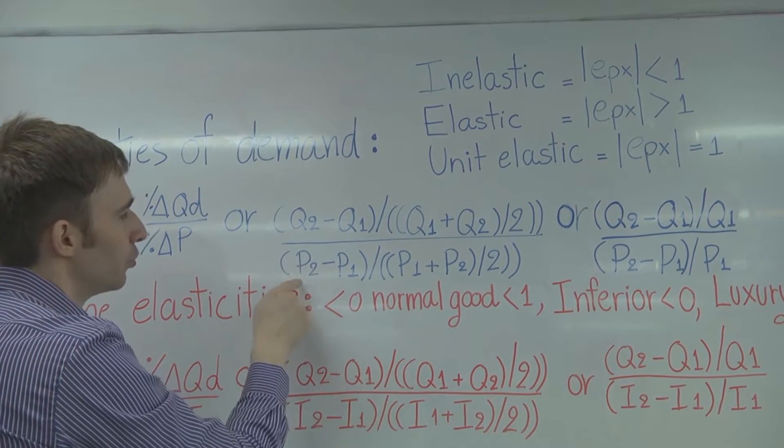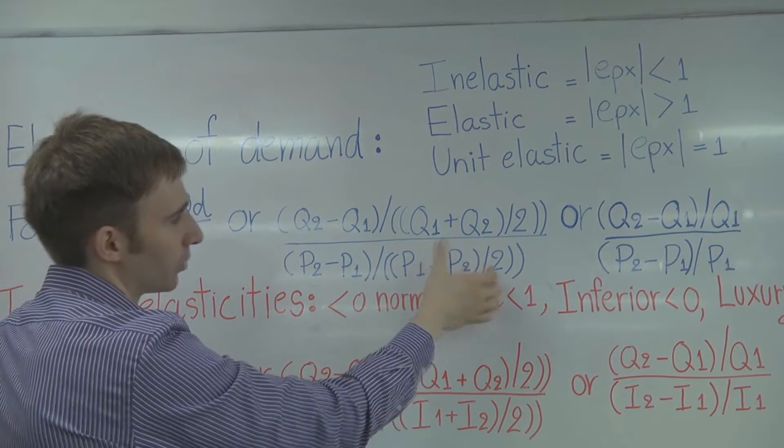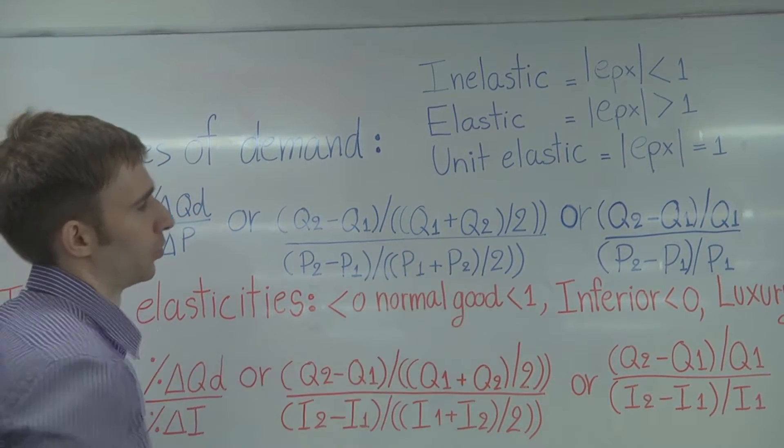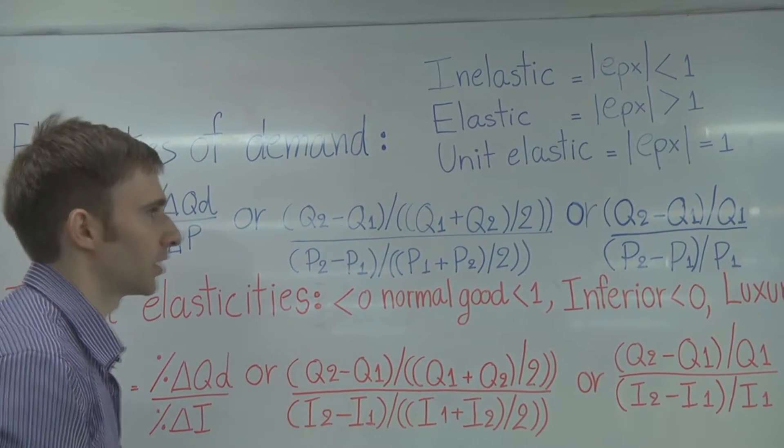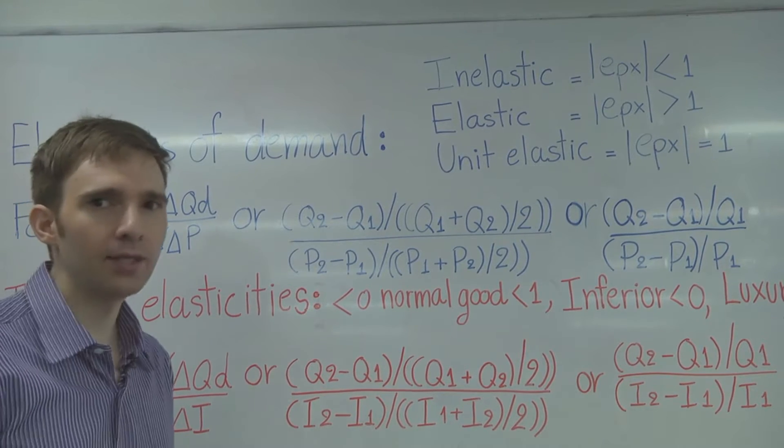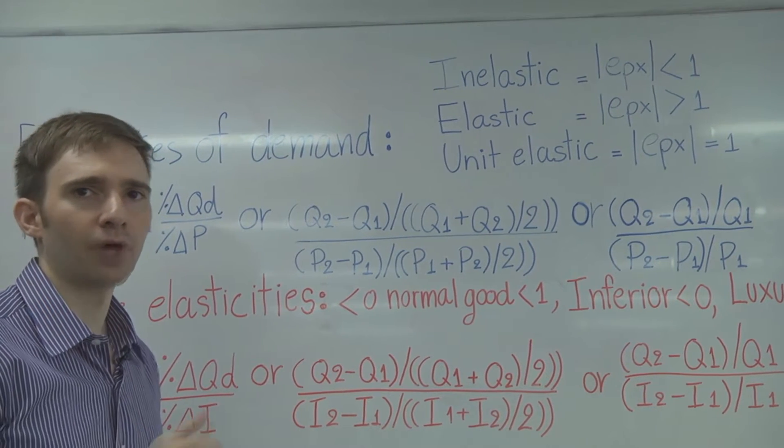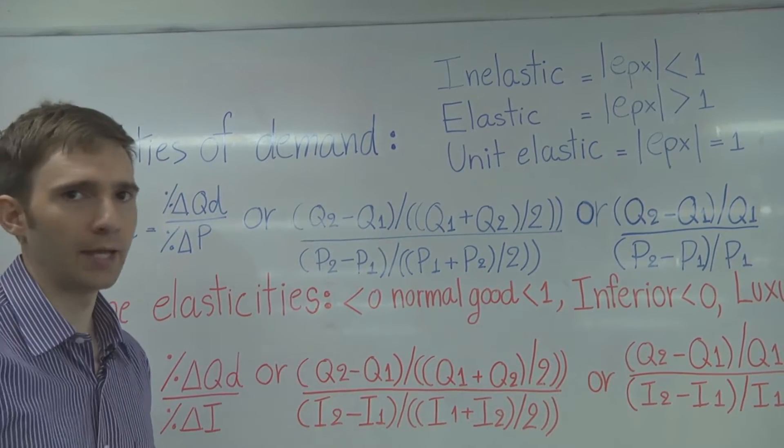And then for your denominator, you'll take your new price minus your old price, divided by the average between the new and the old. The reason why we like the average is because it allows for adjustments for seasonalities. It'll help soften if there's any extreme values between quantity one and quantity two in your data.